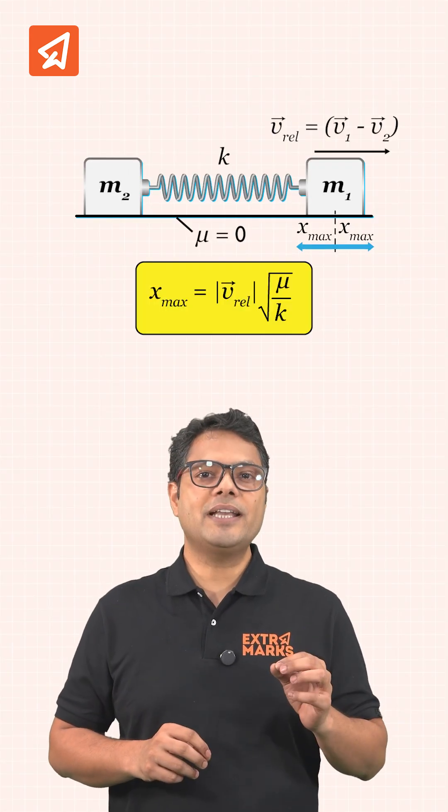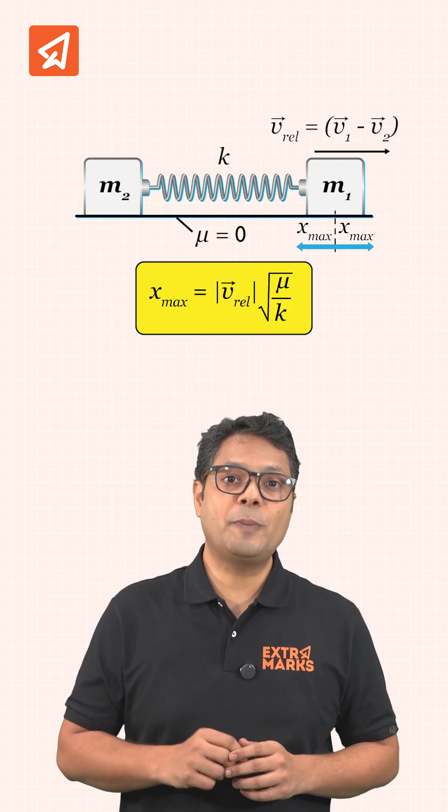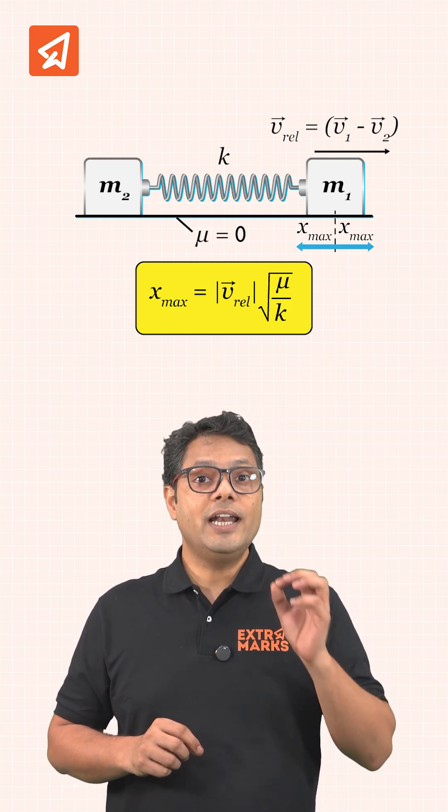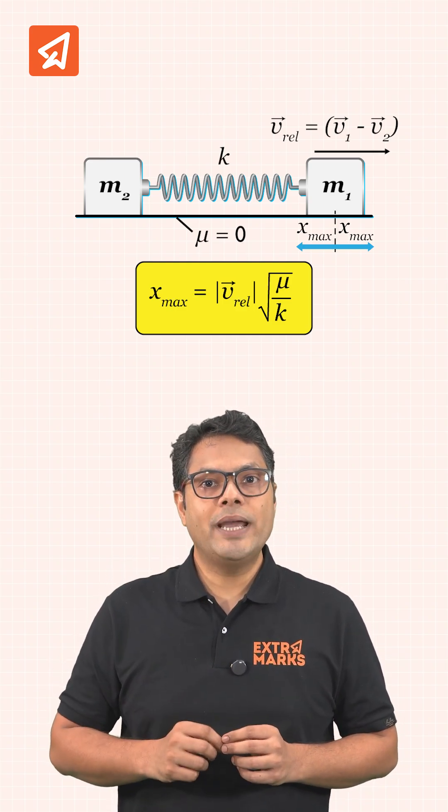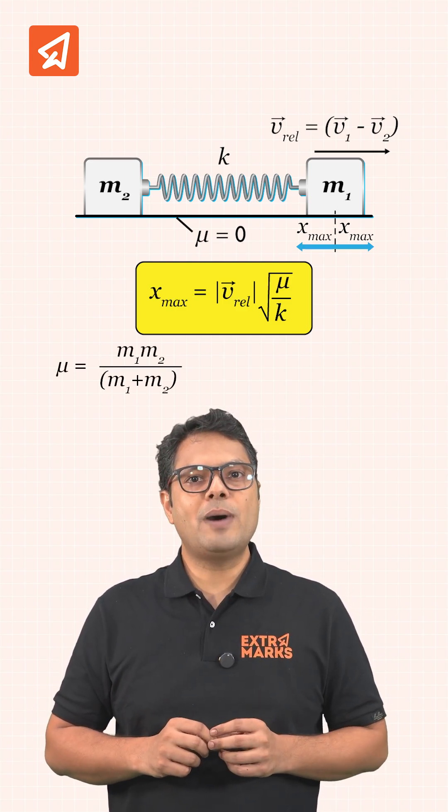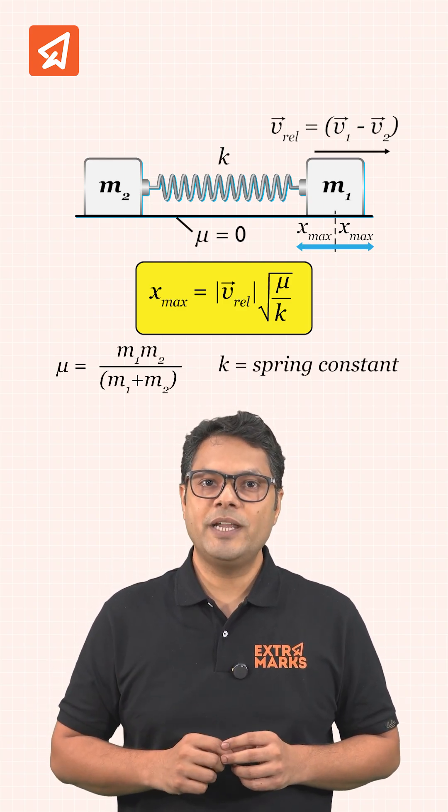So the trick is the maximum extension or compression in the spring is equal to relative velocity of one block with respect to the other into square root of mu by k, where mu is the reduced mass of the system and k is the spring constant.